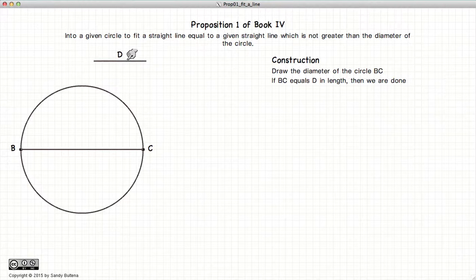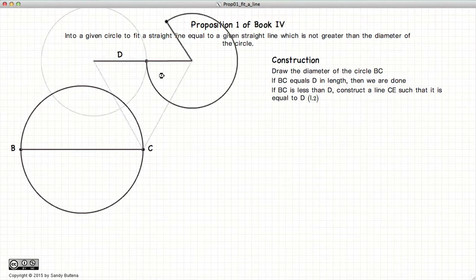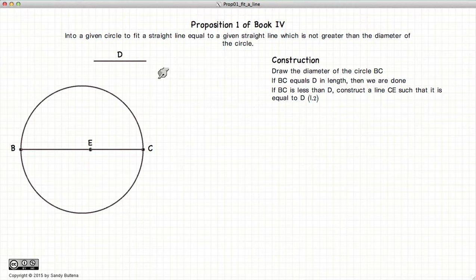So now we have to take D, and we are going to create a line CE that is equal to length D. And we're going to do that using the methods described in Proposition 2 of Book 1. So now our line CE is equal to our line D.